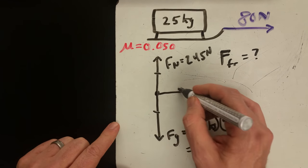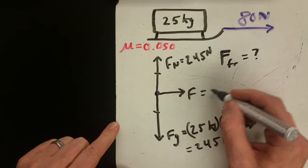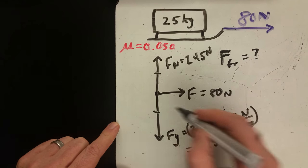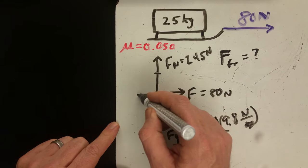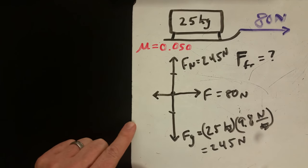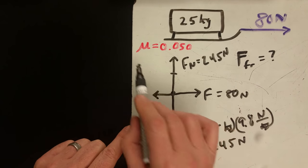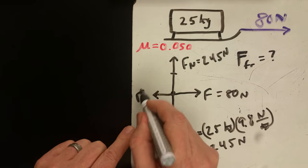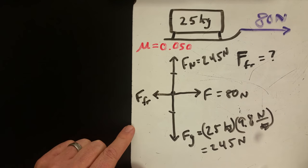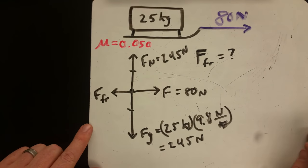We know we've got 80 newtons going out this way and we've got some friction going back that way. We're not given the amount of friction, we're just given mu, so that we will have to solve for.